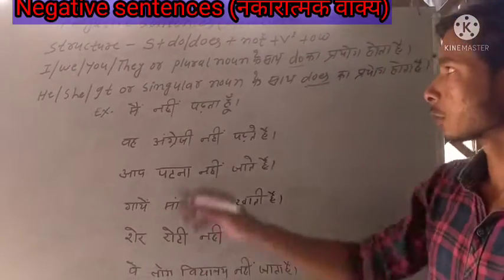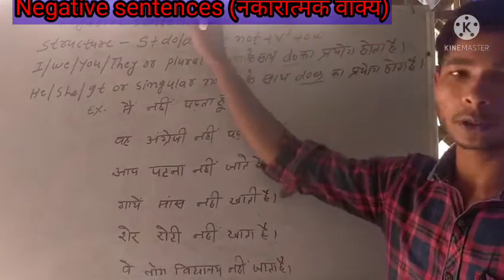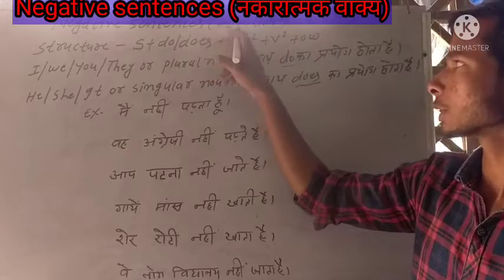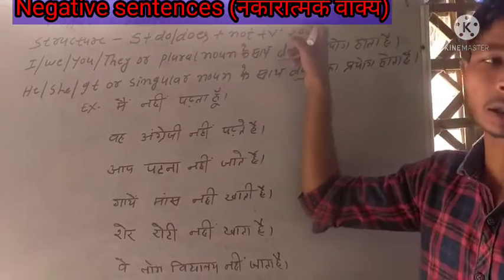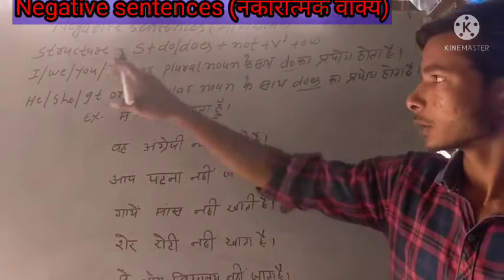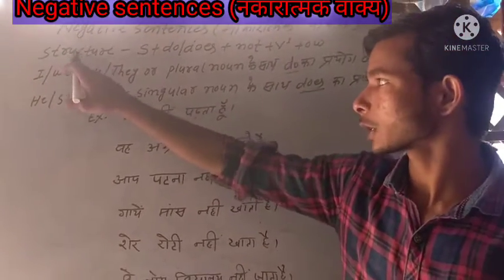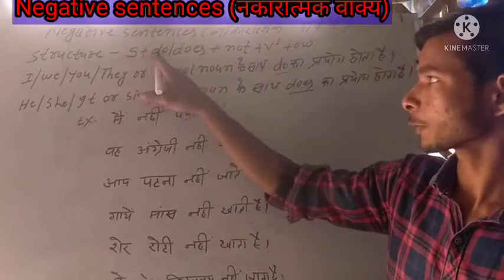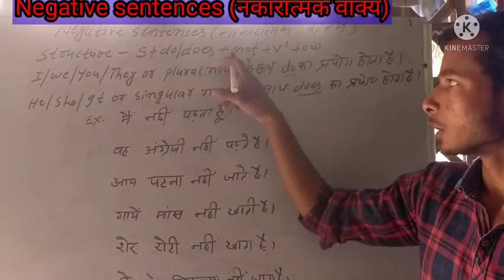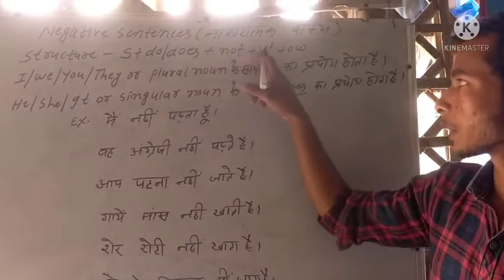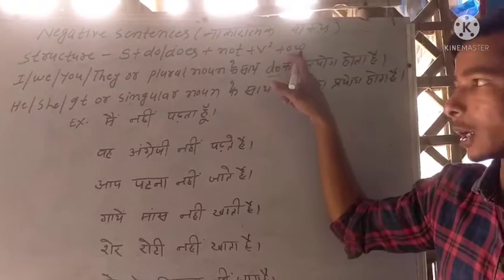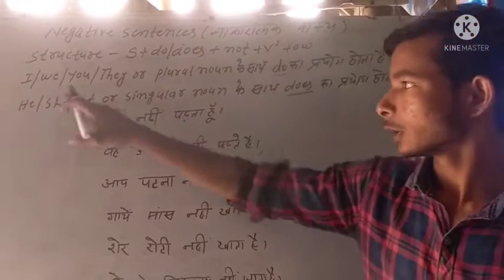Yes sir. Present indefinite tense and negative sentence. Negative means — do you understand? Yes sir. The formula is: Subject plus do or does, plus not, plus V1, plus other words. Yes sir.